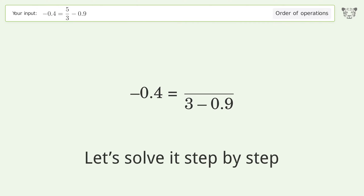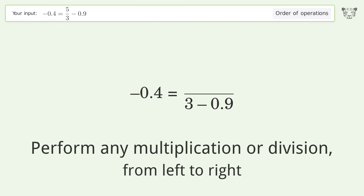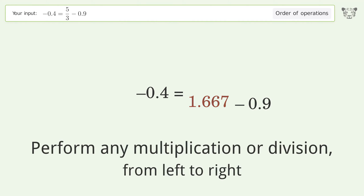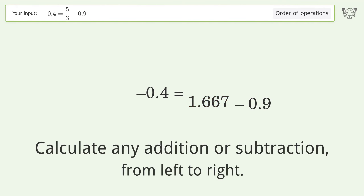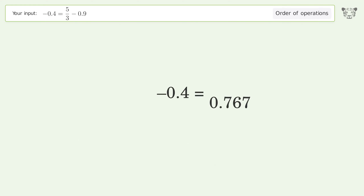Let's solve it step by step. Perform any multiplication or division from left to right: 5 over 3 equals 1.667. Then calculate any addition or subtraction from left to right: 1.667 minus 0.9 equals 0.767.